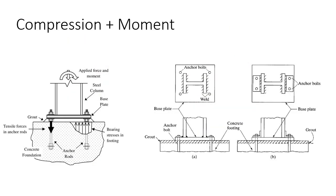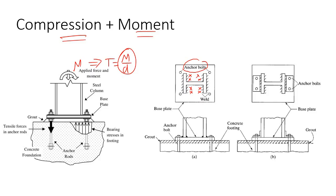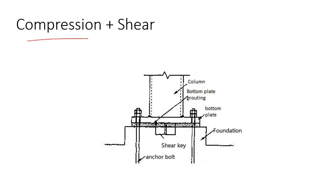In addition to compression, if there is also a moment, you cannot put the anchor bolts inside the flanges. You have to transfer the tensile force caused by the moment, so you must place the anchor bolts outside the column flange. As you can see in the plan view, in this case the anchor bolts are placed outside the flange for this reason.